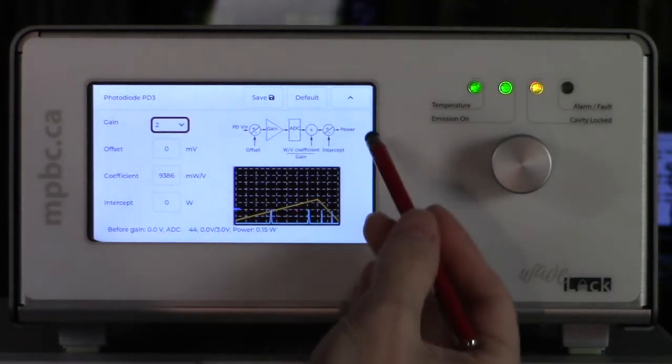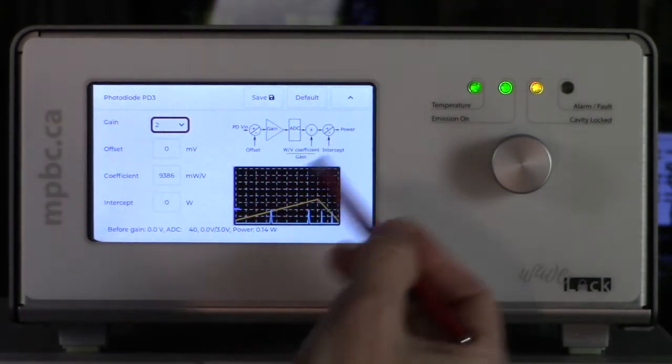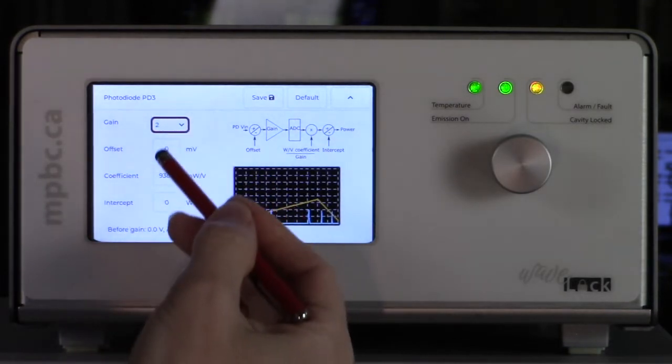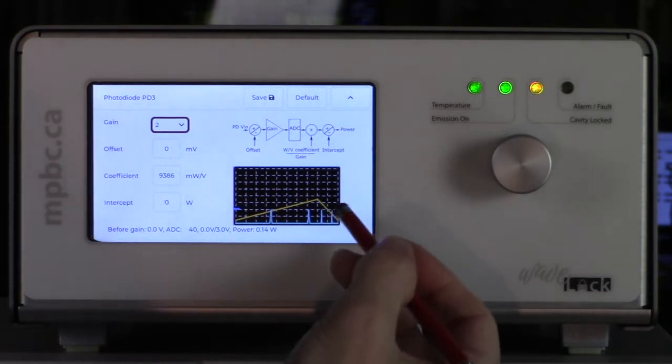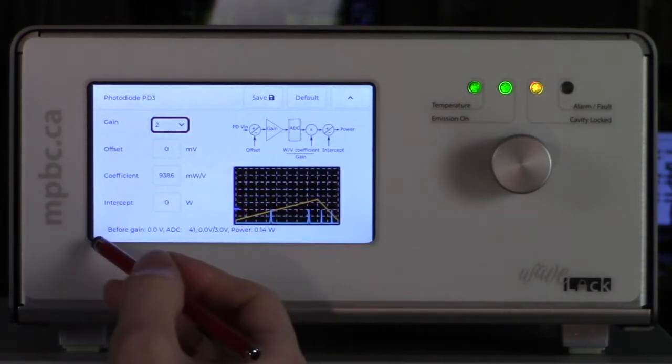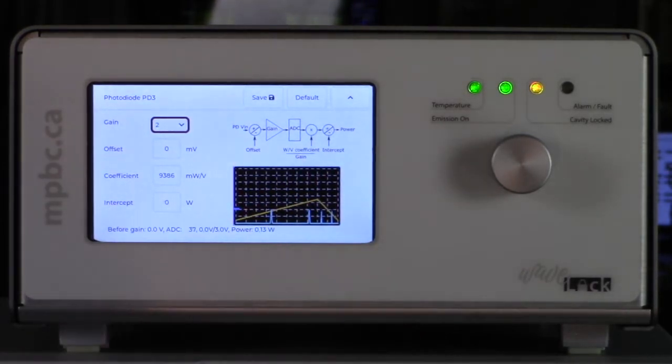On the screen we have a block diagram and we have labels and controls for the portion of the block diagram. There is a little oscilloscope and also information in the bottom.